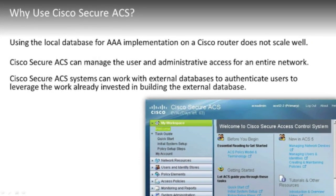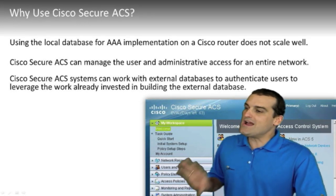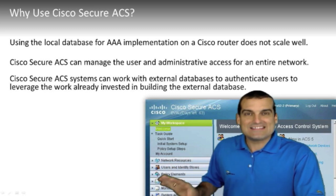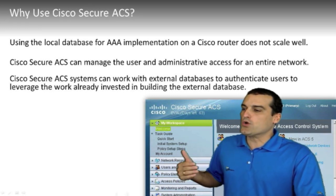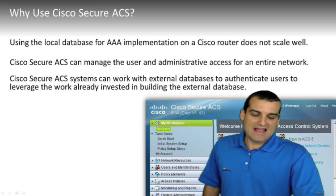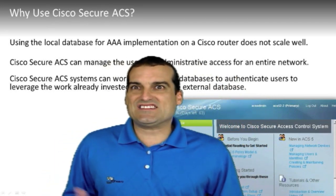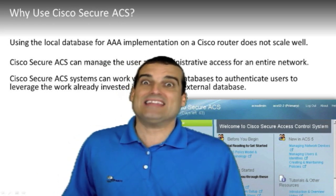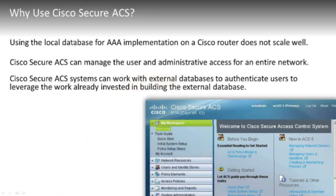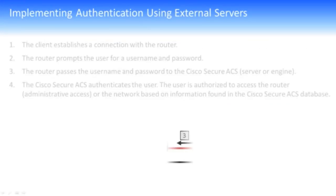We want to take advantage of a centralized database — one that is going to allow our Cisco routers, switches, and firewalls to go ahead and do the AAA checks, security checks, and various parameters against that centralized database. We don't want to have to worry about these AAA security configurations on a device-by-device basis. Just imagine: you have 7,000 Cisco devices and 10,000 user accounts. Can you imagine trying to keep all of those local databases synchronized as users leave or are added to your company? It would be a pure nightmare.